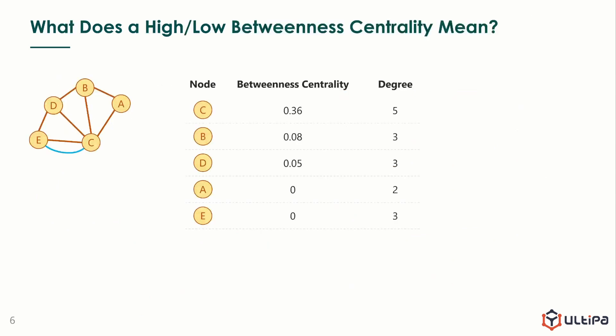These are the betweenness centralities of all nodes in this graph. Node C is ranked at the top, followed by B and D, and it may surprise you that nodes A and E have score of 0, although they both have considerable connections. It makes us think about the practical meaning of betweenness centrality. What does a high or low betweenness centrality mean?